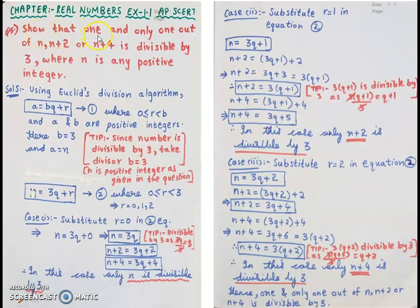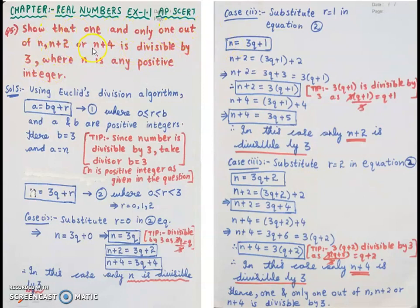The next question: show that 1 and only 1 out of n, n + 2, or n + 4 is divisible by 3, where n is any positive integer. Unlike previous questions asking for square or cube, here the keyword is 'divisible.' At any given time, exactly one from n, n + 2, and n + 4 should be divisible by 3.